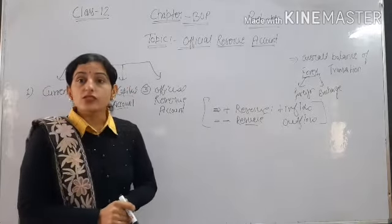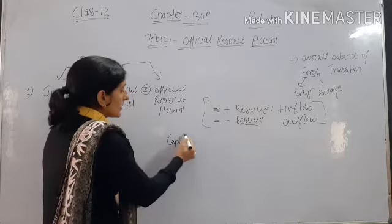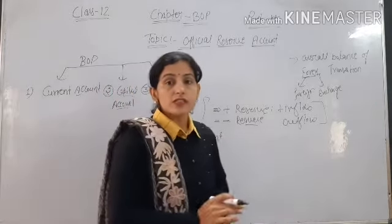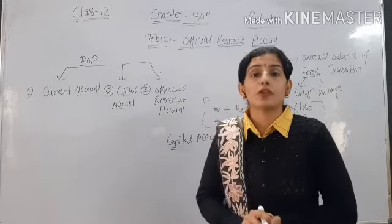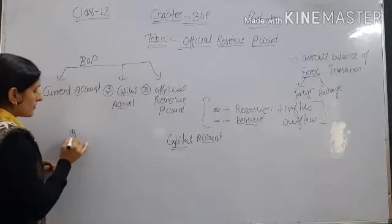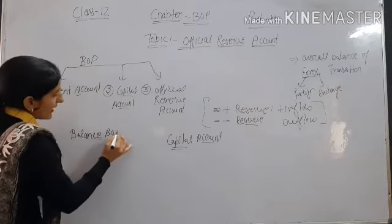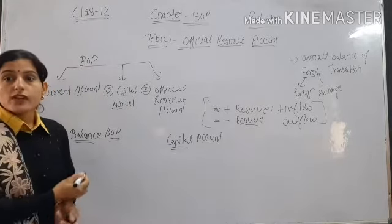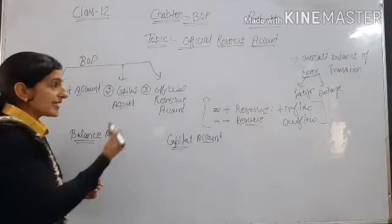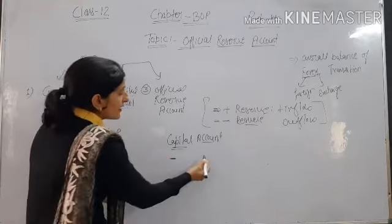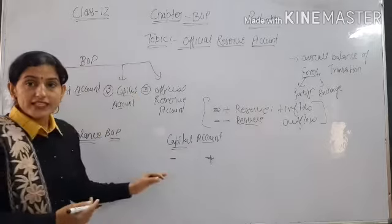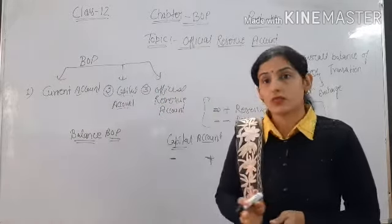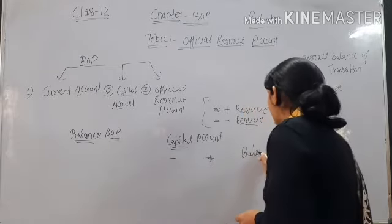Sometimes the officially reserved account is shown together with the capital account. When officially reserved account is shown with the capital account, there is always a balance in our BOP. Why? Because whatever we receive, increase in foreign exchange is shown with a minus sign and decrease is shown with a plus sign. So there is always plus-minus equality, meaning there is always balance in our BOP.